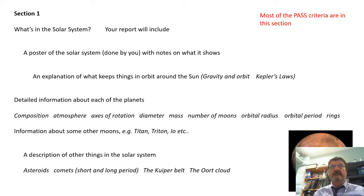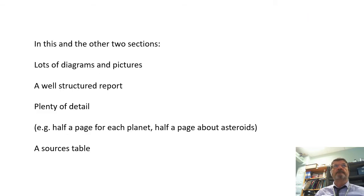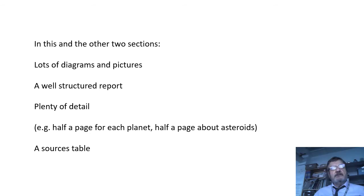So other things in the solar system. In this and the other two sections, lots of diagrams, lots of pictures. A well-structured report has an introduction, has subheadings, plenty of detail. For example, about the planets, about half a page for each planet, half a page about asteroids, and a sources table. Don't forget a sources table.